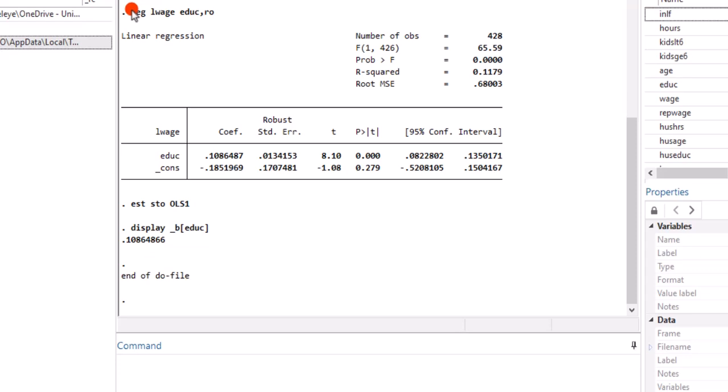So we have the results. This is the table for the first code right here. The second code here shows me that I have stored the OLS results. And here is just for me to display the coefficient of education, the same thing as shown in the table. So let me take you to PowerPoint to wrap this up.